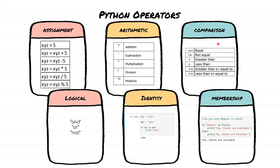Now let's come to comparison operators. Comparison operators are very commonly used whenever we have to do some kind of flow control or decision making. For example, let's say you want to go to a play store and if the price of a PlayStation is less than $300, you want to buy it. You are checking whether the price is less than or equal to $300 and then making a decision — that is using the less-than-equal-to comparison operator.